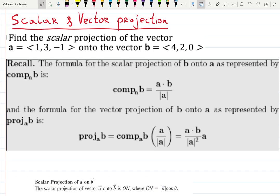For this question we need to review what scalar and vector projections are. The question asks find the scalar projection of the vector A onto the vector B. There are two types of projections we learned recently.